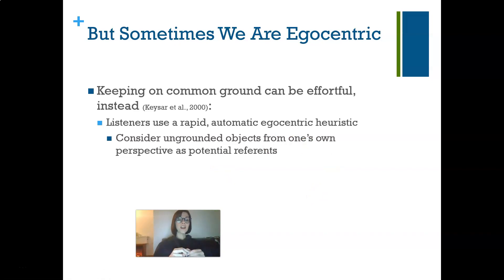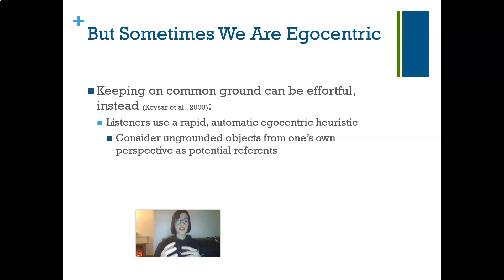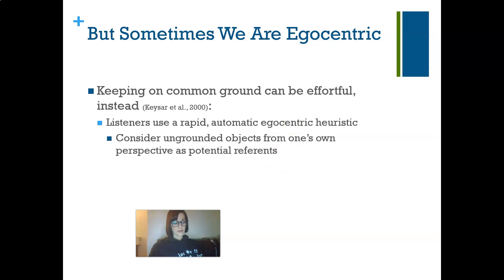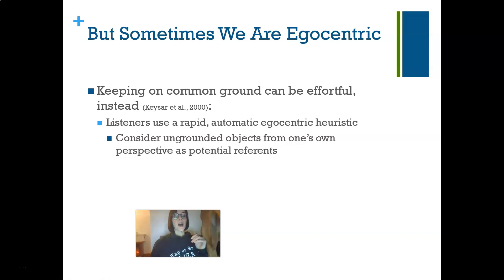Keeping to common ground can be really effortful. KSAR and colleagues in 2000 found that we tend to use a very rapid, automatic, egocentric heuristic — we assume that other people know what we know. This is called ungrounded information: information that I know that you don't necessarily know.